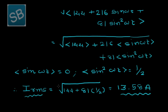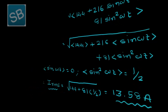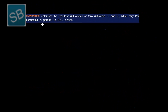That is the root mean square value of current, 13.58 ampere. With this, illustration 4 is complete. Starting illustration 5: calculate the resultant inductance of two inductors L1 and L2 when they are connected in parallel.